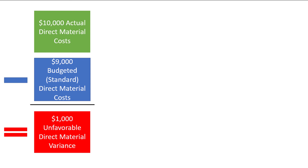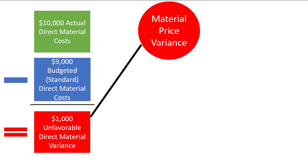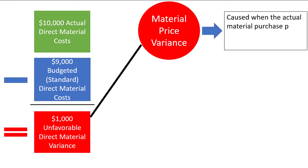Oftentimes we can investigate cost variances to determine what caused the deviation from the budgeted standard. In the case of direct materials, there are two reasons why we might have a budget variance. First, we might have a material price variance, which is caused when the actual material purchase price is different from the standard price. Maybe each pound of materials was budgeted to cost $5, but the company ended up paying something higher or lower, creating the variance.